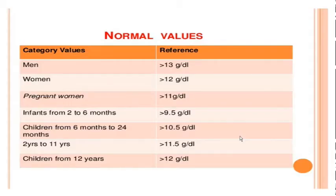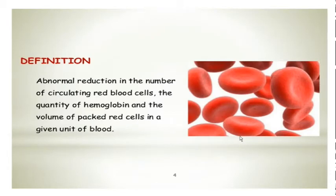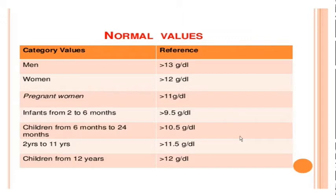So it can be any one of the three which can be responsible for anemia, and the normal haemoglobin values in men and women — as you can see the different values — it always comes in a range where men have 13 to 18 grams, women 12 to 16, and for the different age groups you have these haemoglobin levels.